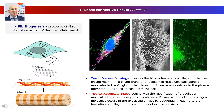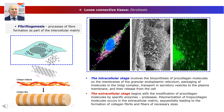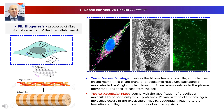Let's consider the mechanisms of biosynthetic activity of fibroblasts using the example of collagen fiber formation — a process referred to as fibrillogenesis. The biosynthesis of collagen fibers occurs in two stages. The intracellular stage involves the biosynthesis of procollagen molecules on the membranes of the granular endoplasmic reticulum, packaging of molecules in the Golgi complex, transport in secretory vesicles to the plasma membrane, and their release from the cell through exocytosis. The dynamics of synthetic processes are demonstrated by real-time intracellular transport of labelled procollagen precursors, stained green.